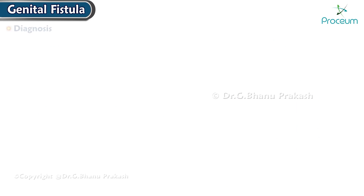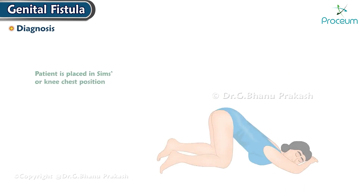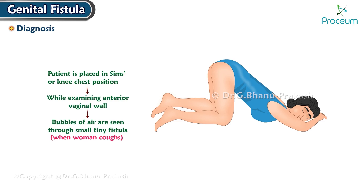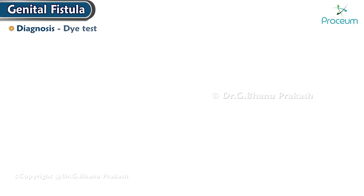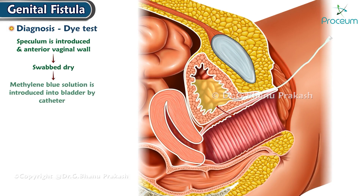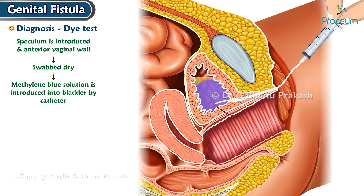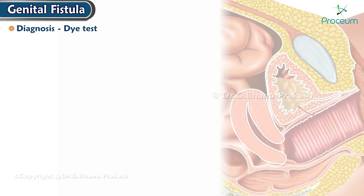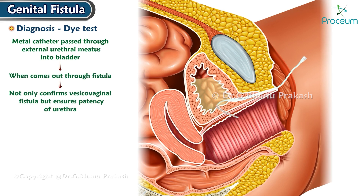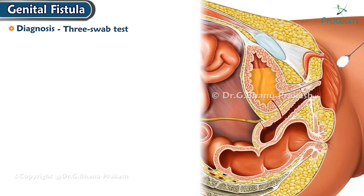Diagnosis is most often made from typical history and local examination. The patient is placed in Sims or knee-chest position; while examining the anterior vaginal wall, bubbles of air are seen through small, tiny fistulas when the woman coughs. Dye test: a speculum is introduced and the anterior vaginal wall is swabbed dry; when methylene blue solution is introduced into the bladder by catheter, the dye is seen coming out through the opening. A metal catheter passed through the external urethral meatus into the bladder, when it comes out through the fistula, not only confirms vesicovaginal fistula but ensures patency of the urethra.